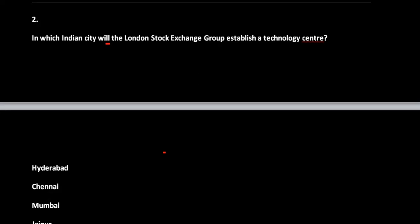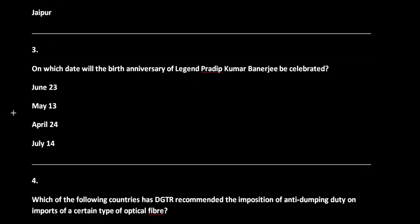Question 3: On which day will the birth anniversary of legend Pradip Kumar Banarji be celebrated? Options are June 23, May 13, April 24, and June 14. The correct answer is option A, that is June 23. The All India Football Federation declared June 23 as AIFF Grassroots Day in honor of the legendary Indian footballer Pradip Kumar Banarji.